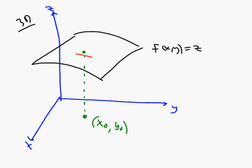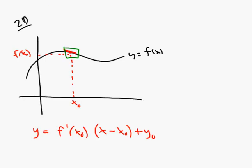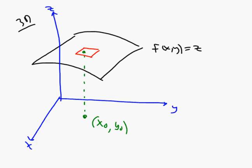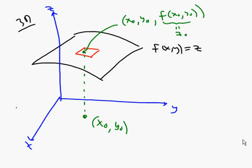Around this point there's a tangent plane. The analogy is true: back in the 2D world the tangent line does a pretty good job of approximating the black curved function near the point of tangency. The same thing is true here. Near the point of tangency — this green point — which has coordinates x₀, y₀, comma f of x₀ comma y₀, or z₀, the tangent plane does a very good job of approximating the surface f of x, y.